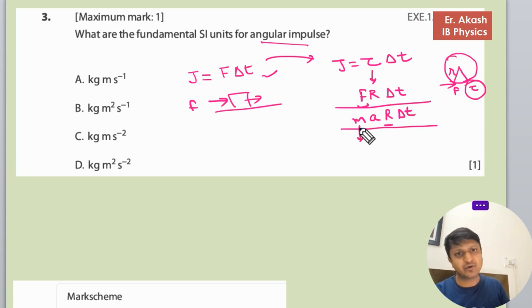So second with second cancels off, it becomes kg meter squared, and with the second in the denominator we will write it as second minus one here.